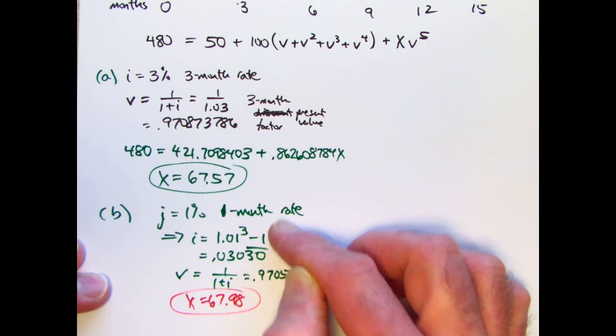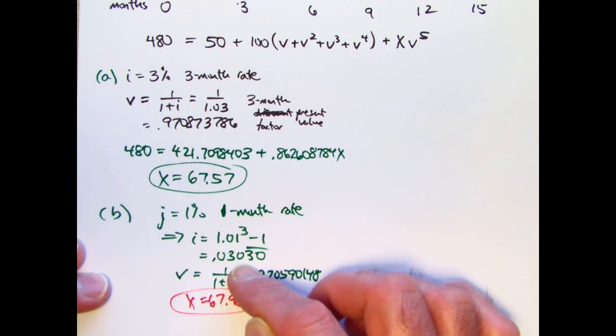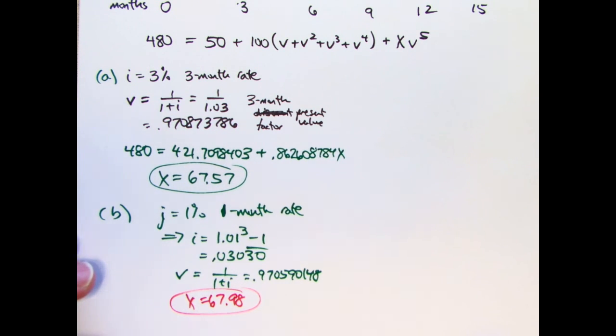A 1% one-month rate is really equivalent to about a 3.03% three-month rate, so you're going to need to pay a little bit more in that last month for Part B.